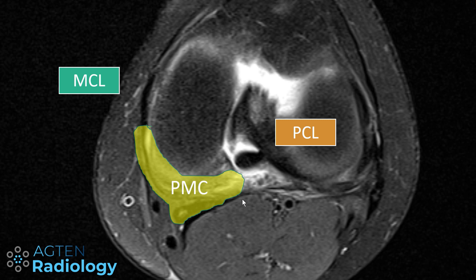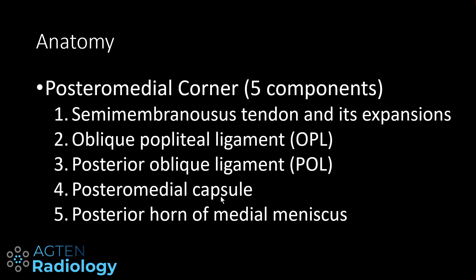In this little corner, there are basically five structures that are frequently named in articles regarding the posterior medial corner. These are: the semimembranosus tendon and all its expansions, then the OPL, also known as the oblique popliteal ligament, then the POL, the posterior oblique ligament — don't ask me why they have these confusing abbreviations — then the posterior medial joint capsule, and obviously the posterior horn of the medial meniscus. So these five structures basically make the posterior medial corner.